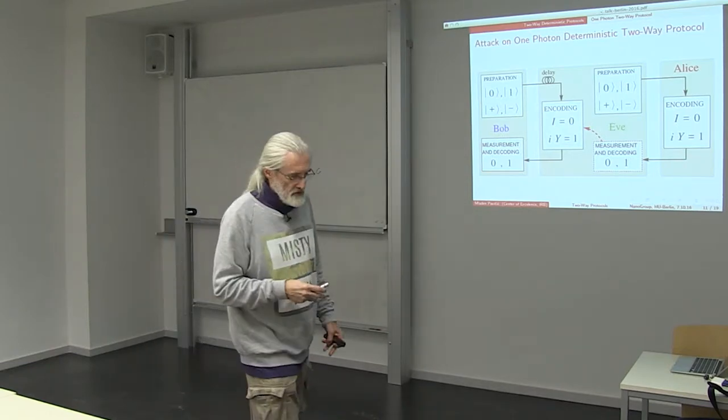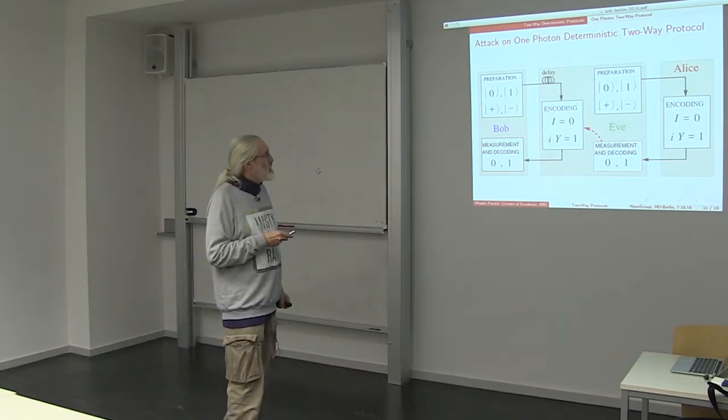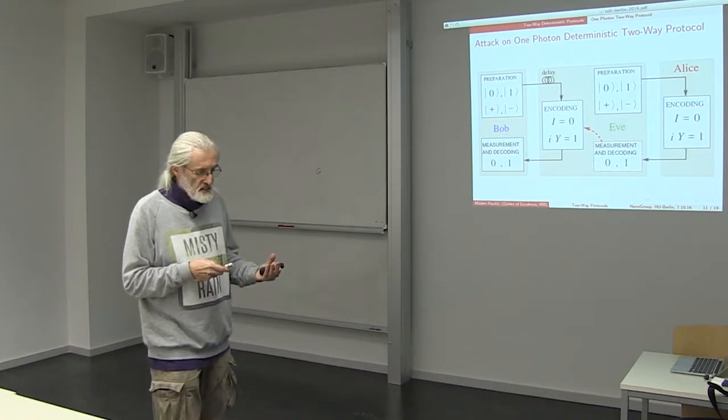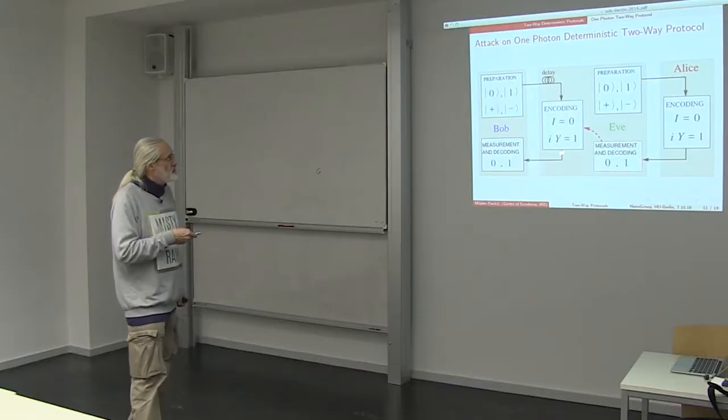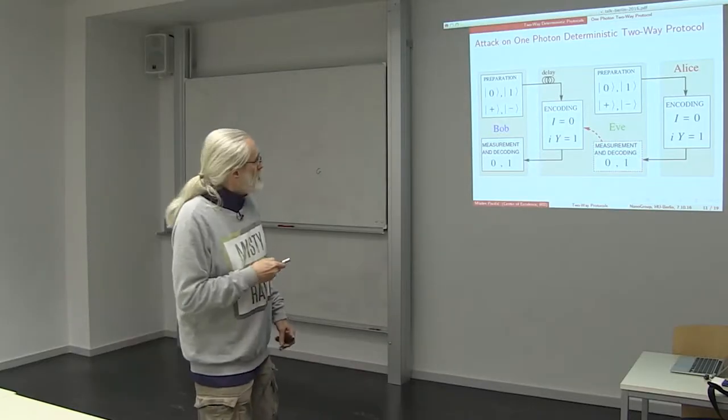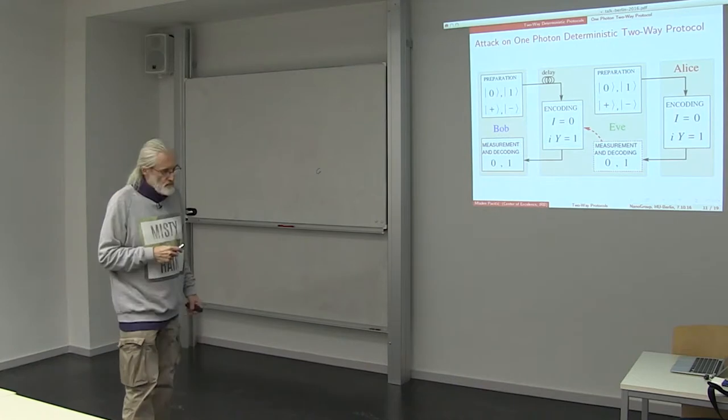Alice, thinking the photon was coming from Bob, would apply the same technique by either encoding or not encoding the photon - meaning either leaving it as it came and sending it back, or flipping and sending it back. Eve would repeat such an encoding on Bob's photon and send it back to Bob.